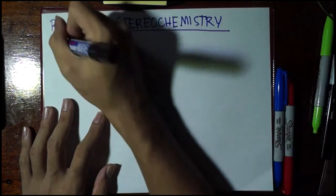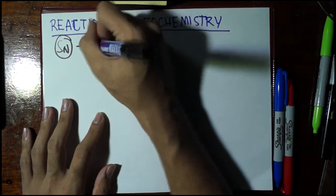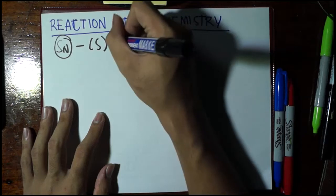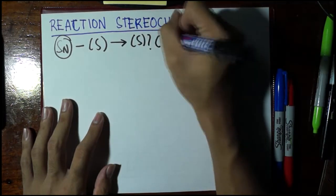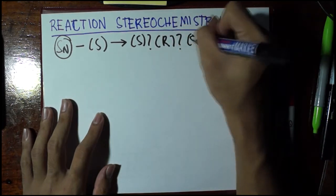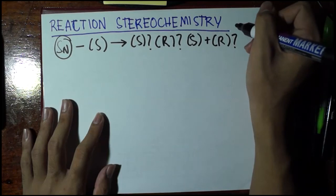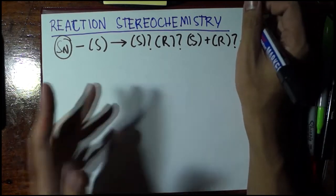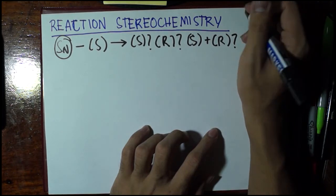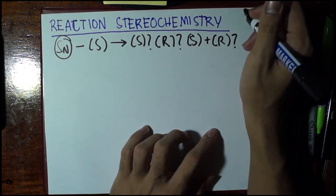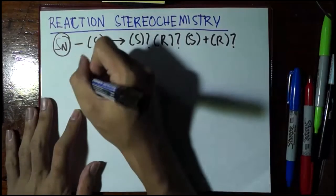That is, our question would be here. In case of nucleophilic substitution, if we have a starting material that is S, after the reaction, will it remain S, will it become R, or will it be a mixture of S and R? Because we know that an isomer could interchange by a rearrangement reaction into another. But in this case, the rearrangement reaction could actually be also the substitution reaction.